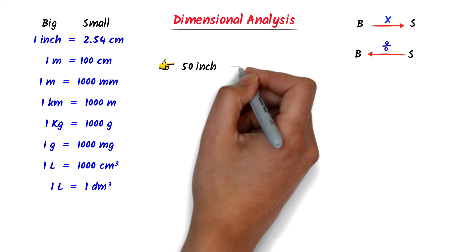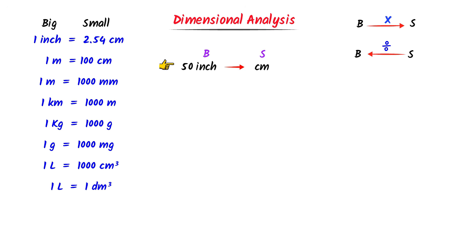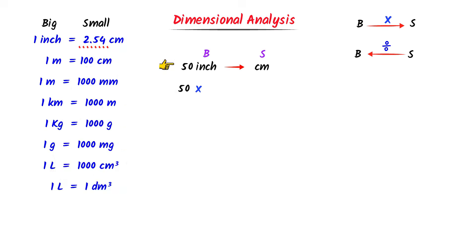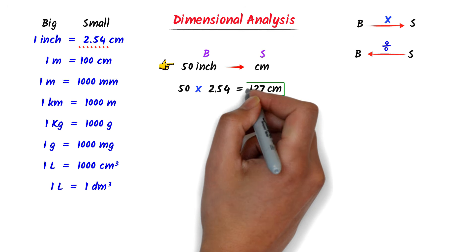For example, convert 50 inches to centimeters. We know that inch is a bigger unit and centimeter is a smaller unit. I write bigger and smaller. Since I go from bigger to a smaller unit, I multiply 50 by the conversion factor. The conversion factor between inch and centimeter is 2.54. After calculation, I get 127 centimeters.